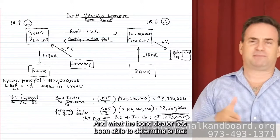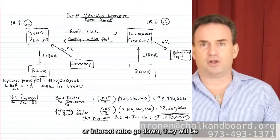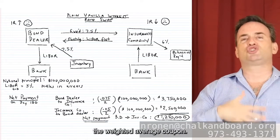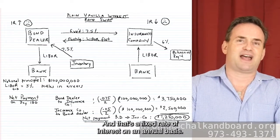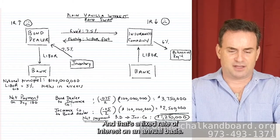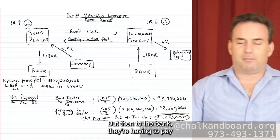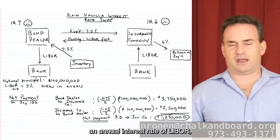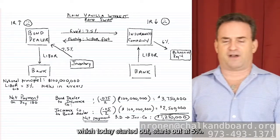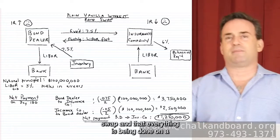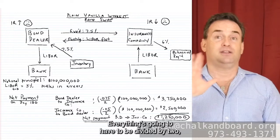What the bond dealer has determined is that on this inventory of bonds, whether interest rates go up or down, the weighted average coupon on all the bonds is 7.5% — a fixed rate on an annual basis. So from the inventory they're earning 7.5% fixed. But to the bank they're paying LIBOR annually, which started at 5%. We're going to assume they enter into a swap and everything is done on a semi-annual basis, so everything will be divided by two.